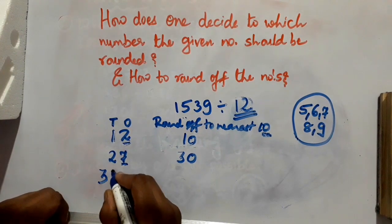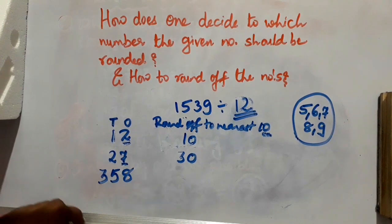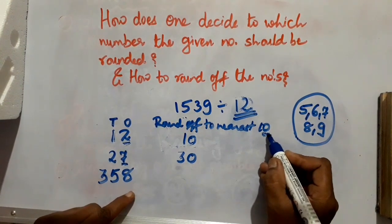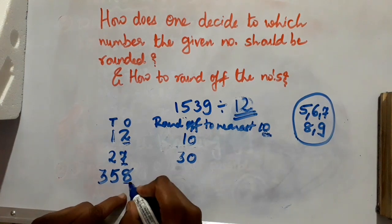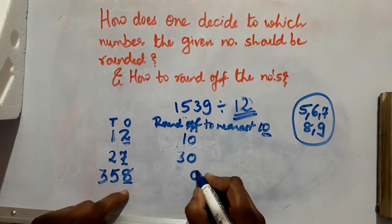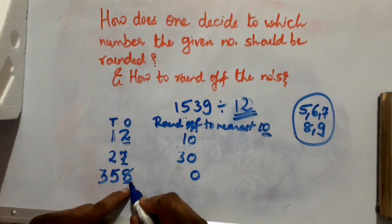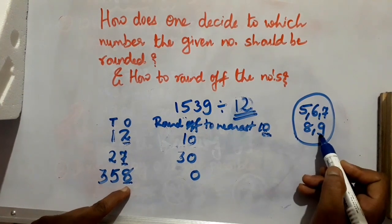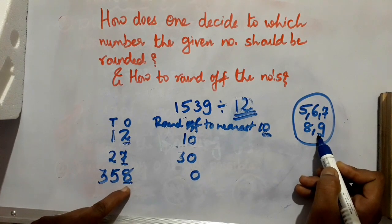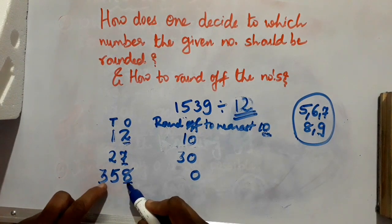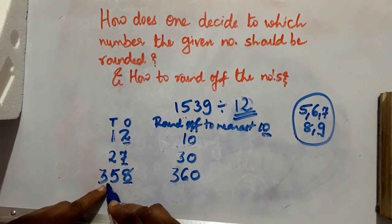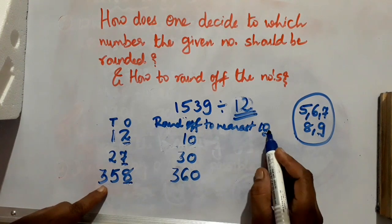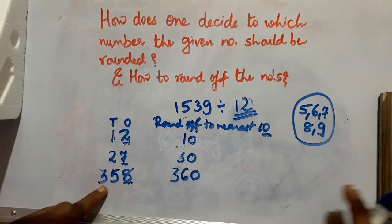Say you are given 358 and you have to round off to the nearest 10. Underline 1 digit and write 10. Check the underlined number — is it greater than or equal to 5? Yes, so the condition is satisfied. 35 plus 1 becomes 36. So when 358 is rounded off to the nearest 10, it becomes 360.